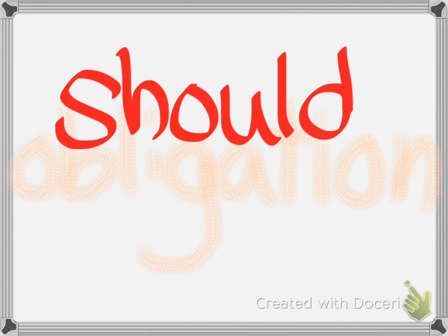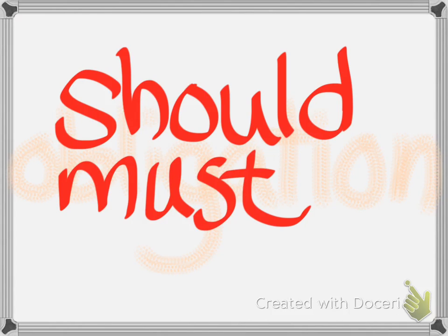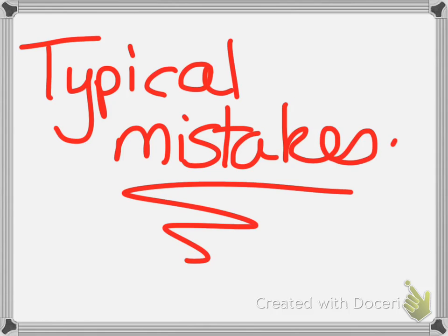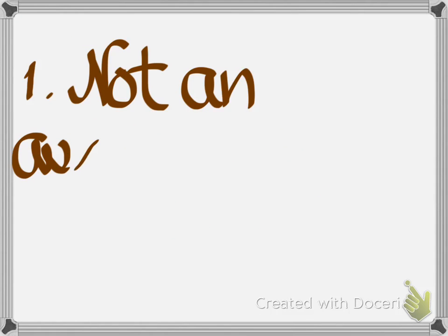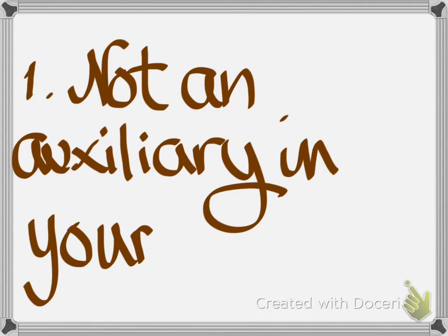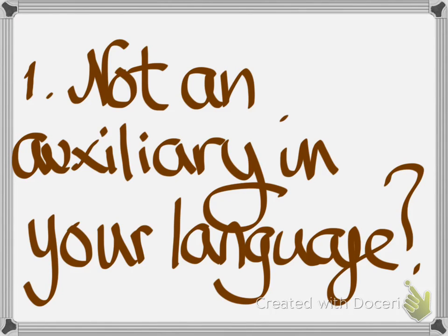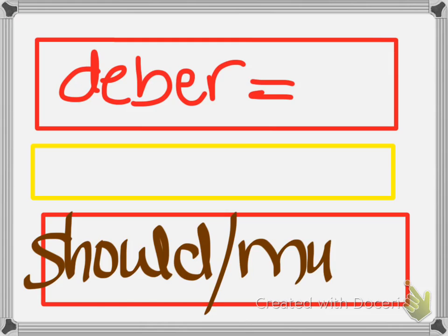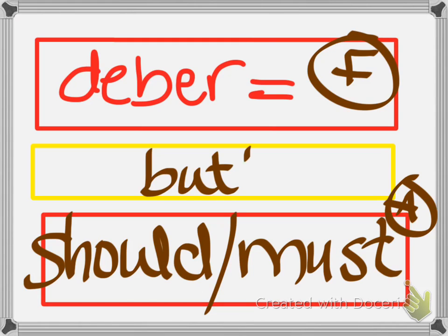We also have modal verbs for obligation, should and must. But you have to be careful with modal verbs. And right now we're going to go through the four typical mistakes that people make and look at how you work with them correctly to avoid the typical mistakes that people make. First one: it's not an auxiliary verb in your language, but maybe it is in ours. And in case of Spanish, I'm thinking specifically of words like deber or poder. It's a full verb in Spanish, but in English it's only used as an auxiliary.